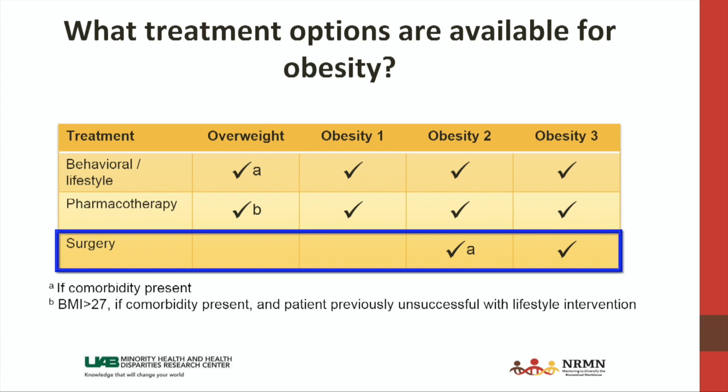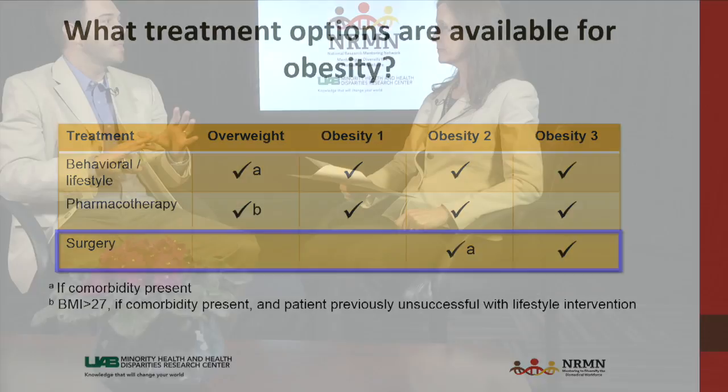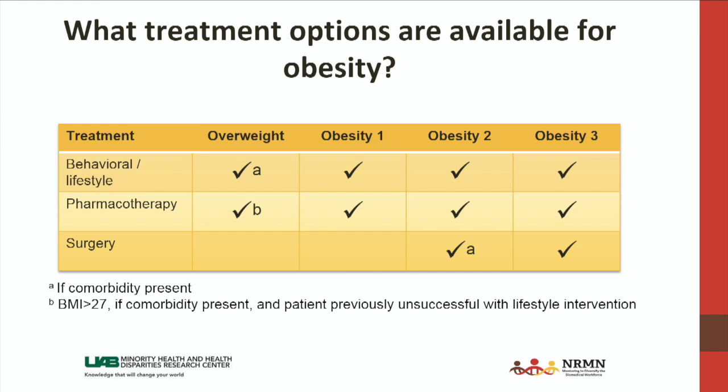Bariatric surgery is really reserved for those with class 3 obesity — a BMI greater than 40 — and in some cases with a less severe level of obesity like class 2 with a comorbidity present. All three options are recommended, but the first line of treatment is the behavioral intervention. Current clinical guidelines specify that you would not include medication or surgery unless someone has already tried a behavioral or lifestyle intervention. And it's not recommended to do medication or surgery in the absence of some form of behavioral or lifestyle counseling — it's the foundation for most individuals.